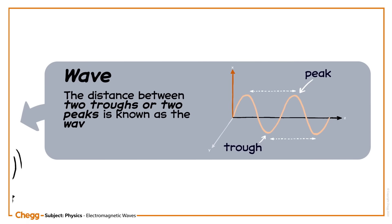The waves have troughs (the lowest points) and crests (the peaks). The distance between two troughs or two peaks is known as the wavelength.